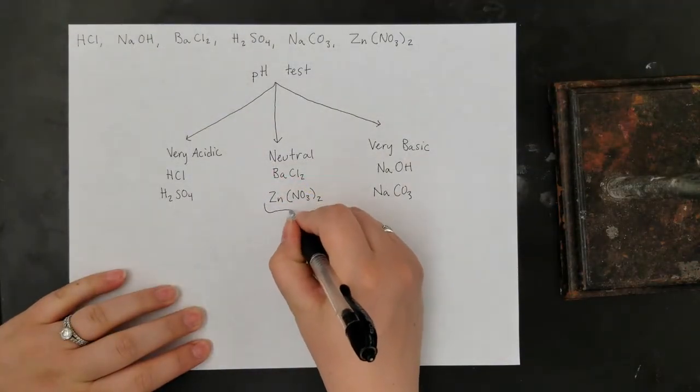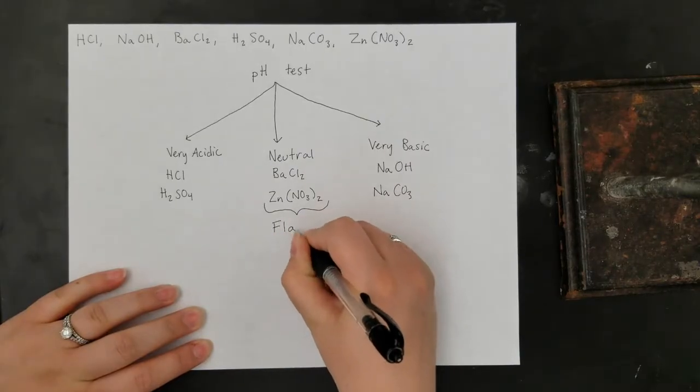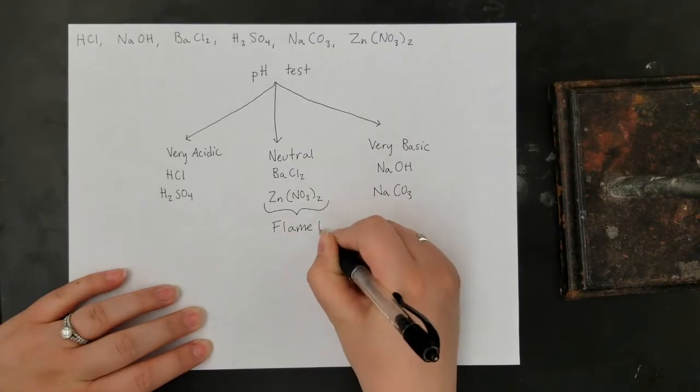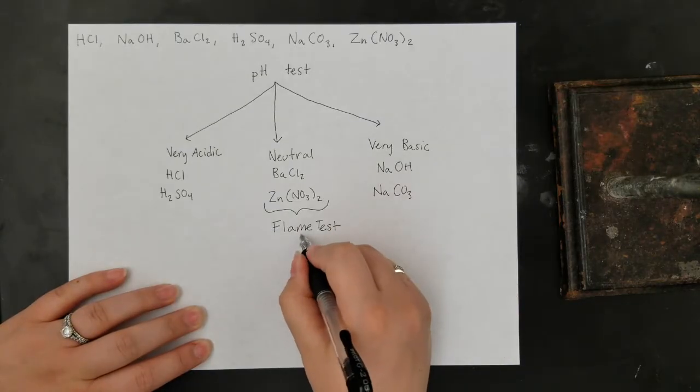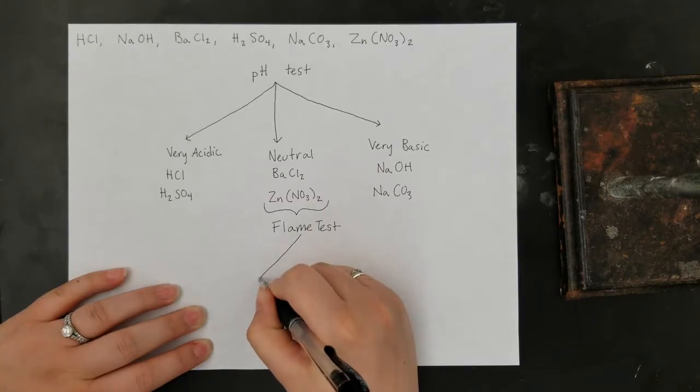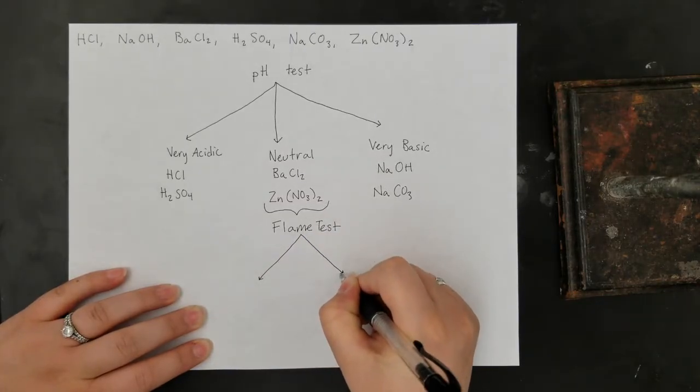After we've done the pH test, we'll need to continue identifying which solution is which. Let's start with the neutral solutions. Thankfully, we only have two neutral solutions, barium chloride and zinc nitrate. If we had more solutions in this group, we would want to probably divide it into a smaller group with another test before trying to identify the individual solutions.